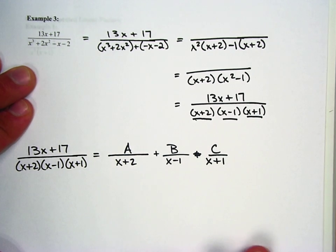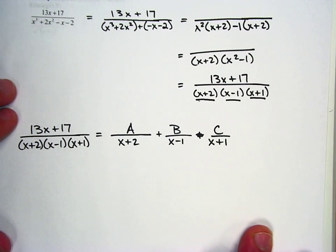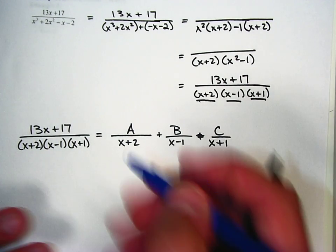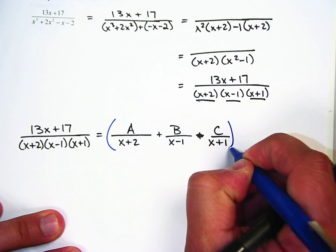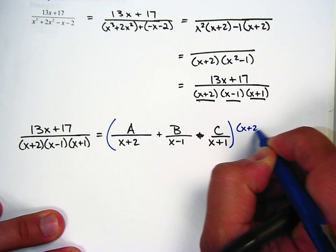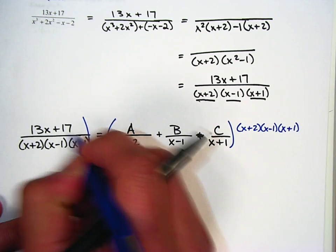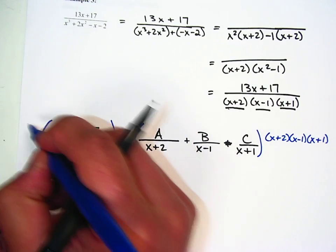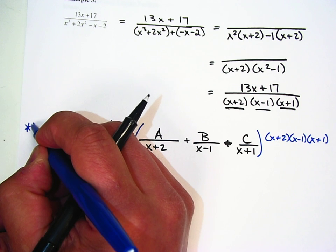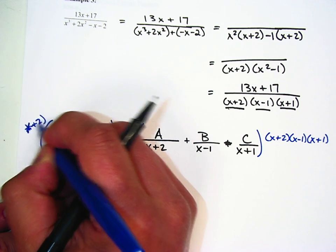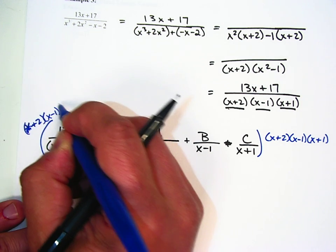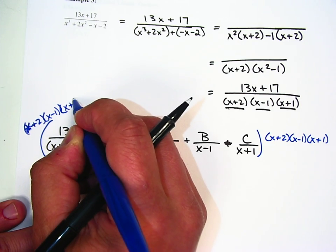Now when I multiply by the common denominator, and that's going to be x plus 2, x minus 1, x plus 1, I'm going to multiply the entire right side by this. Same thing over here. x plus 2, x minus 1, x plus 1.